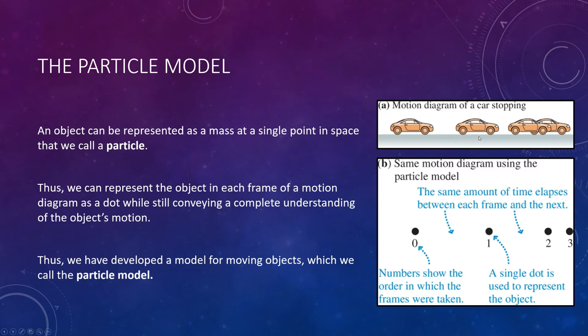If we treat an object as a particle, we can represent the object in each frame of a motion diagram as a dot, while still conveying a complete understanding of the object's motion. Thus, we have developed a model for moving objects that we call the particle model. Here's a great example. Here's the example of the car slowing down. Instead of drawing a car for every frame, which is tedious, why don't we just draw a dot? We still see the same distance between each frame, and so the information hasn't really been lost. All we have to do is tell ourselves this is a car, and we suddenly know exactly what's happening. The spacing is decreasing, indicating that the object is slowing down as it goes from point zero to point three. We have made a simplified view of our situation.